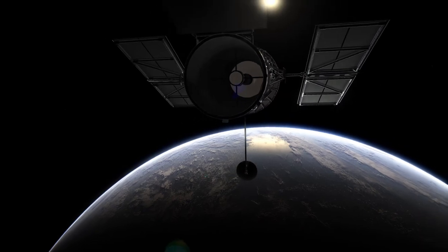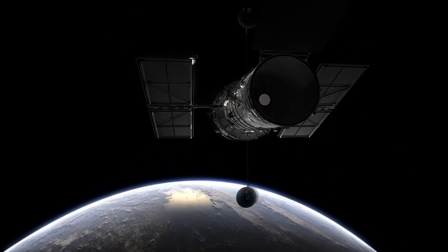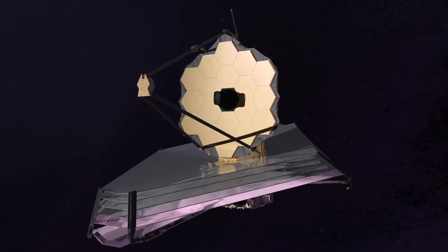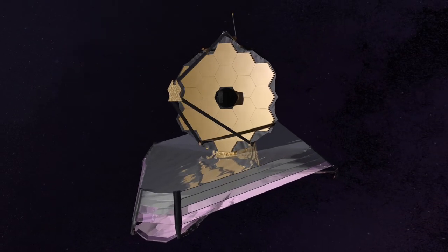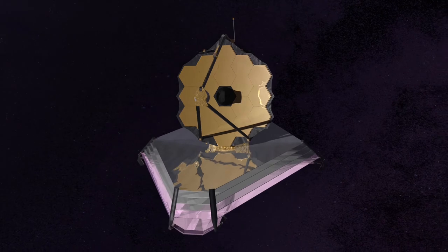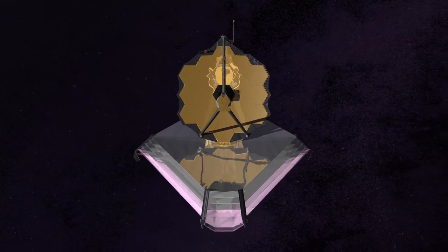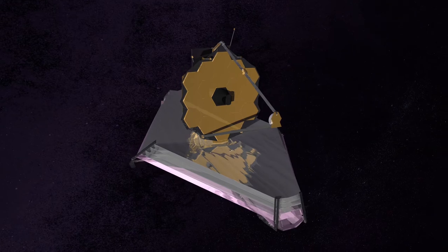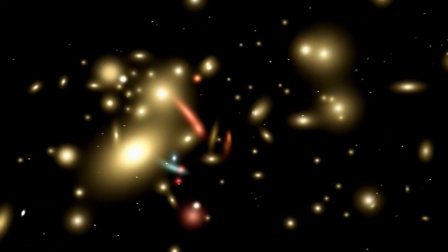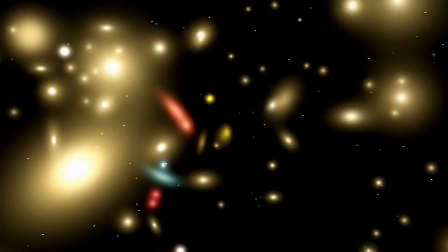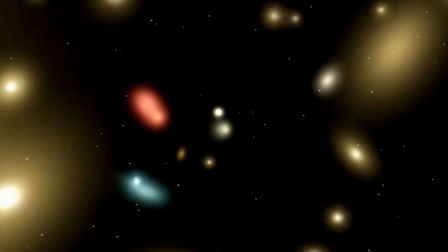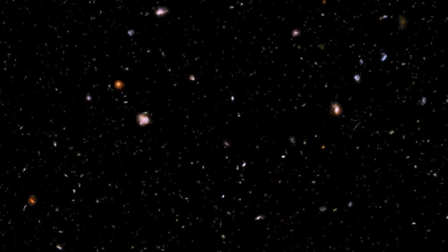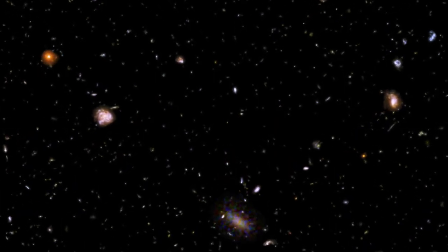While Hubble currently observes the universe primarily at visible and ultraviolet wavelengths, its scientific successor, the James Webb Space Telescope, will be sensitive to a range of wavelengths from 0.6 micrometers orange light to 28 micrometers deep infrared radiation emitted from objects at temperatures of about 150 degrees Celsius. More distant objects in the cosmos are more highly redshifted, and as a result, their light is pushed from ultraviolet and visible wavelengths into the near-infrared.